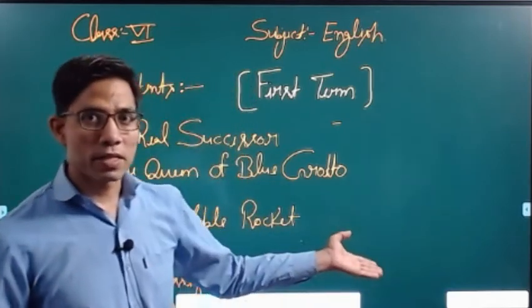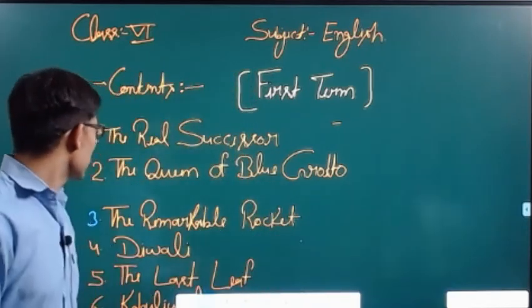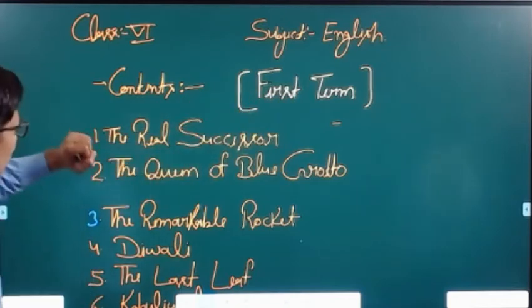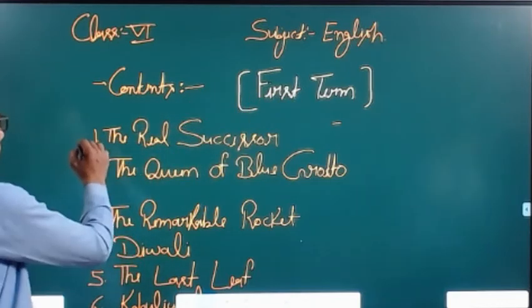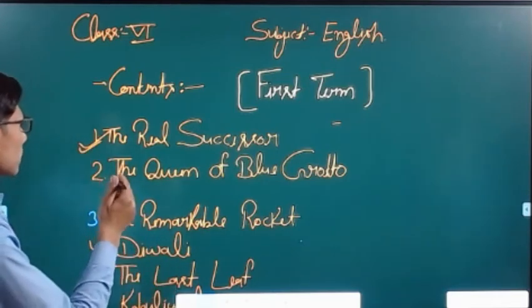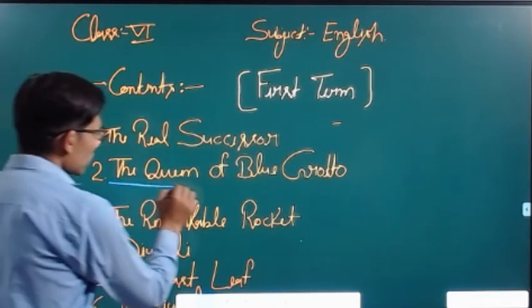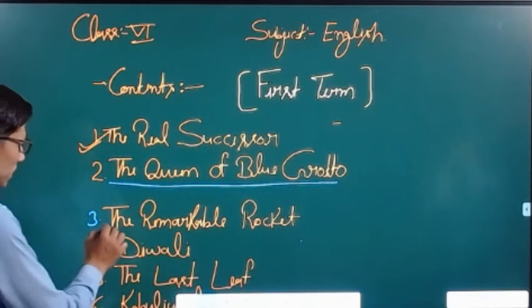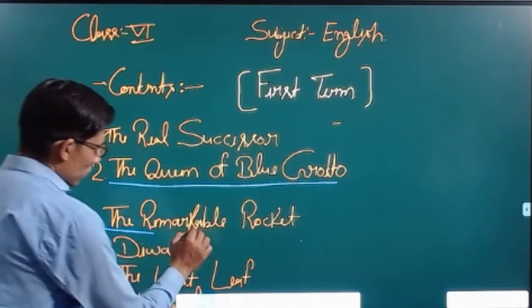Let's start the contents English first. The first chapter is The Real Successor. The second chapter is The Queen of Blue Grotto. And the third chapter is The Remarkable Rocket.